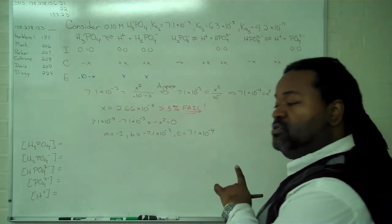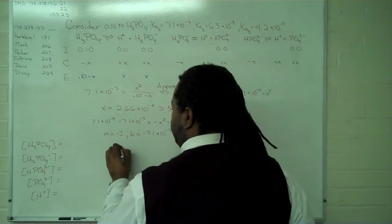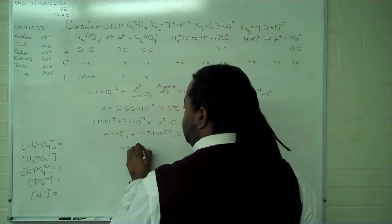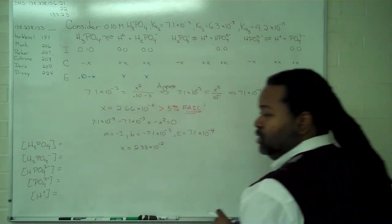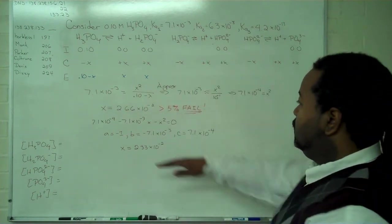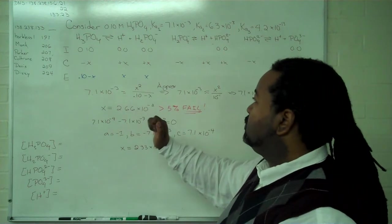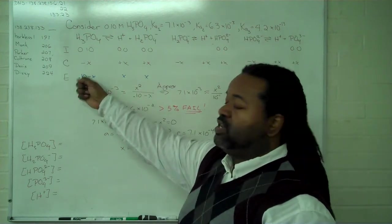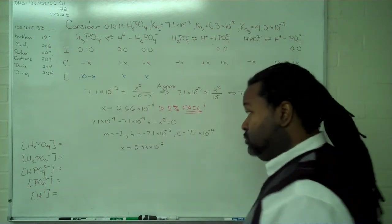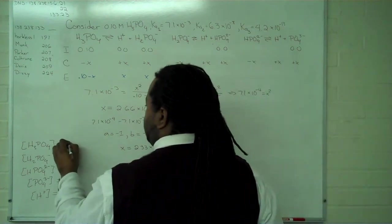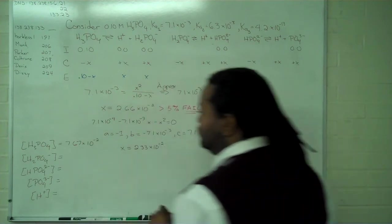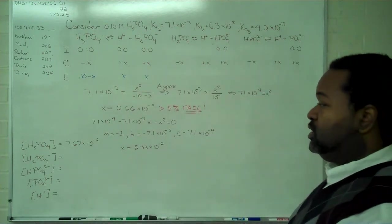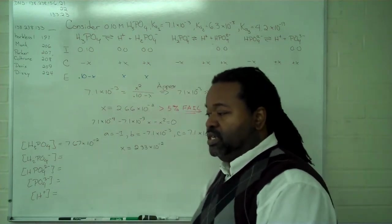We plug these values into the quadratic formula. And we find a value for x, 2.33 times 10 to the minus 2. So this then is our value for x. We can subtract that from 0.1, and this leaves us with 7.67 times 10 to the minus 2.